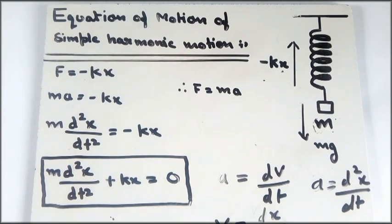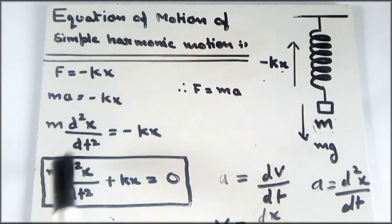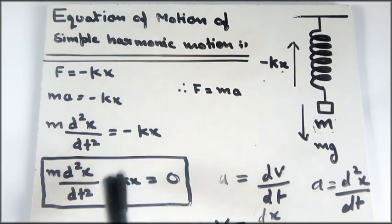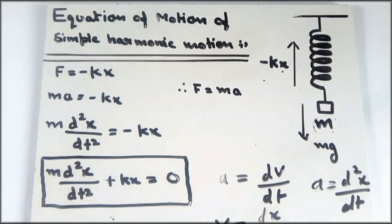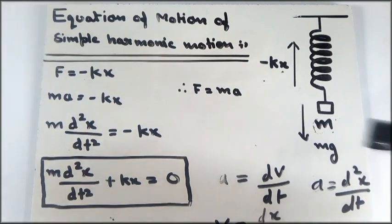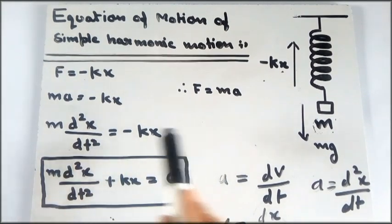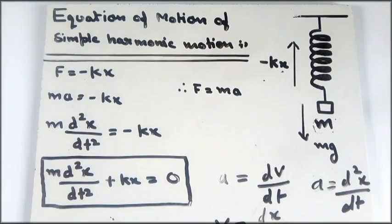Here, m is the mass hanging from the spring. The acceleration is written as the double derivative of x with respect to time. k is the spring constant, and x is the displacement caused by that mass. This equation is known as the equation of motion of simple harmonic motion.